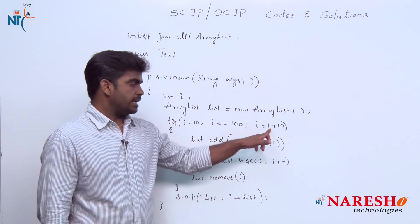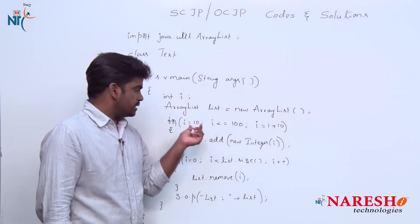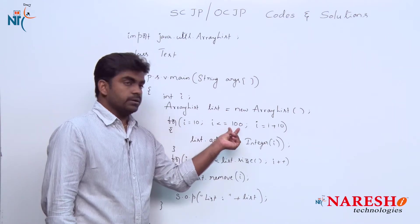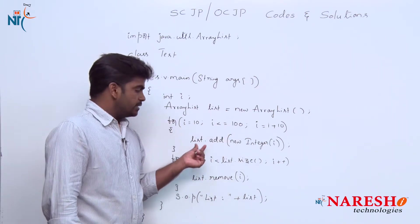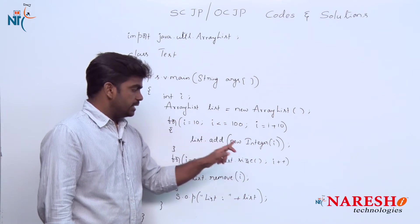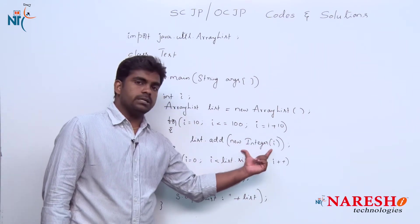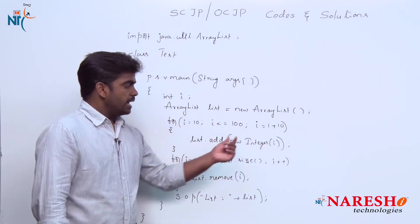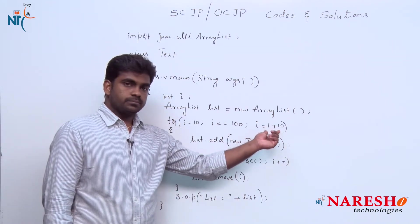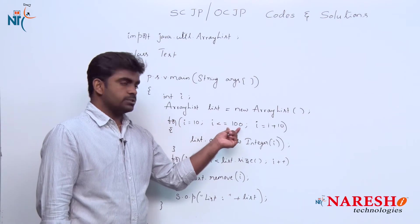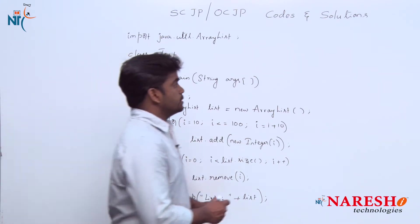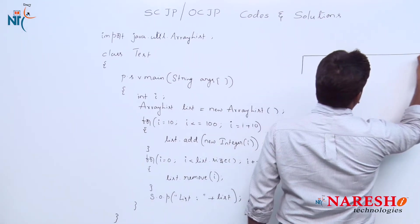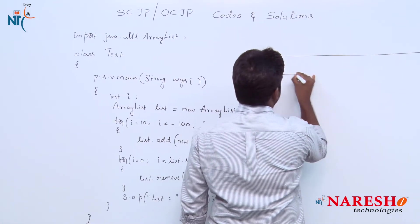It will add the value 10. 10 will be converted into an Integer object and that will be added to the list, and next i value becomes 20. 20 is less than or equals to 100, so like that, total 10 elements will be stored in the list.